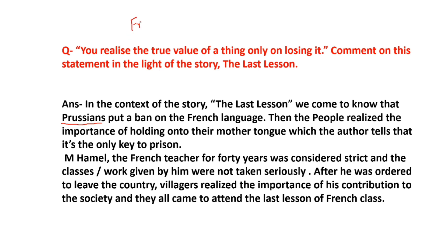When was the Franco-Prussian War? That was in 1870 to 1871. In that period, Prussia comprised the nations of Germany, Poland, and parts of Austria. You can simply refer to Germany there. So in this war, the Prussians defeated the French people, under the leadership of Bismarck.